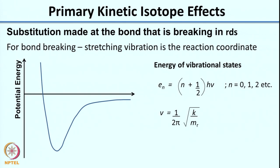When we substitute at the bond that is breaking in the rate-determining step, this is called a primary kinetic isotope effect. If you have the bond at which you made the substitution breaking in the rate-determining step, you have a primary kinetic isotope effect. Whenever we think of bond breaking and bond making, we are essentially interested in the vibrations taking place — vibration plays a very important role in reactions.